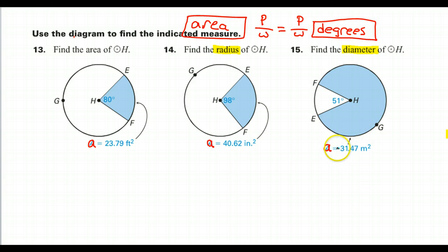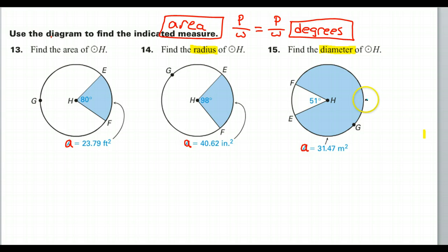You see that we are given the partial area, the area of the sector. So, you know we're going to do part over whole equals part over whole. That part is not different. Okay, here's the thing that's different. The partial area is 31.47, alright, it's the area of the sector.